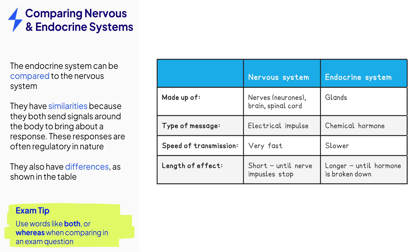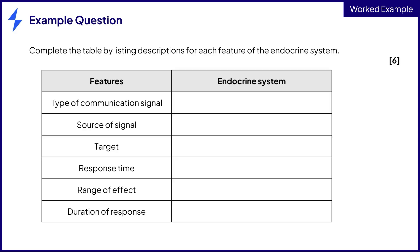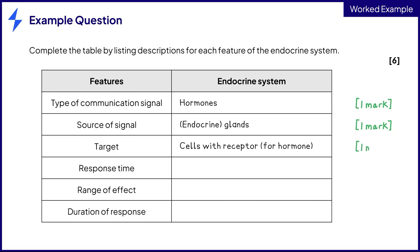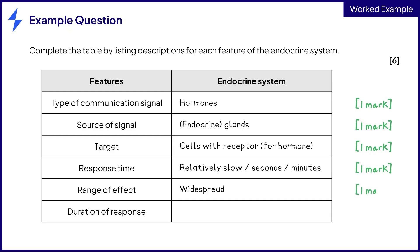Remember to refer to both systems together to gain marks in an exam. Here is an example of a question you may be asked: fill in the gaps in the table to describe features of the endocrine system. The type of communication signal is hormones; the source of the signal is the endocrine glands; the targets are cells with receptors and the target organs. The response time is relatively slow, the range of effect is widespread, and the duration of the response is long.